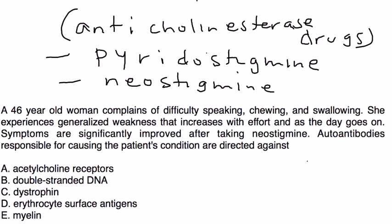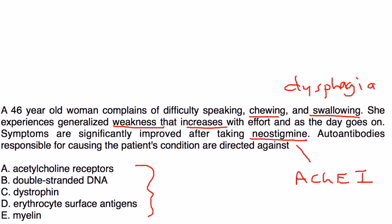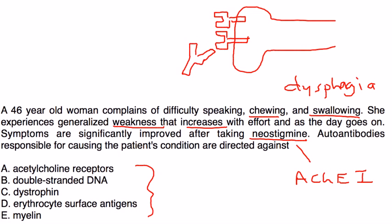A 46-year-old woman complains of difficulty speaking, chewing, and swallowing—dysphagia. She experiences generalized weakness that increases with effort as the day goes on. Symptoms are significantly improved after taking neostigmine, an acetylcholine esterase inhibitor. Antibodies responsible for causing the patient's condition are directed against—so what they're asking is, which one of these five do we have antibodies against? To refresh your memory, I'll draw that diagram really quickly. That was acetylcholine receptor. That's pretty much all the question is asking.